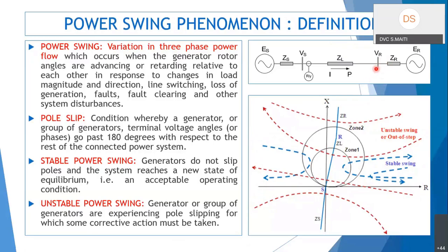The original load point might be in the negative R axis region. If current flows from S to R and we plot the impedance seen by the relay in the R-X plane, it will be in the positive R zone. For an unstable swing, the impedance crosses from right to left or left to right — that is the swing.